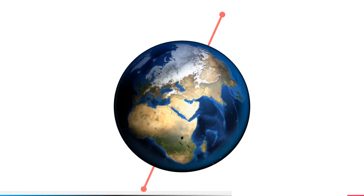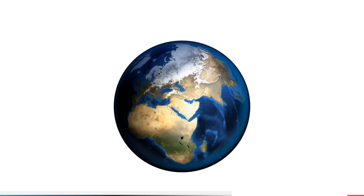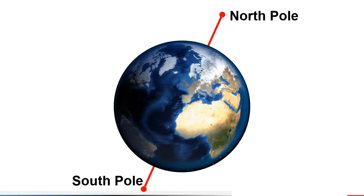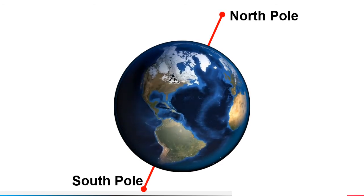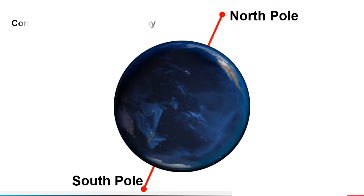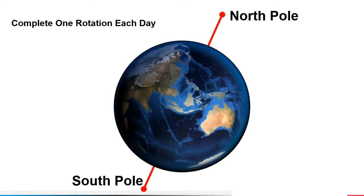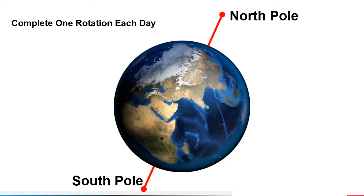Earth's axis is an imaginary pole going right through the center of Earth from top to bottom. Earth spins around this pole making one complete rotation each day. That's why we have day and night.